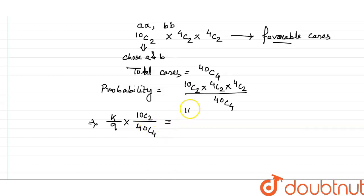You have to compare both sides. 10C2/40C4 × 4C2 × 4C2. If you compare with this, this part is the same. So what you can write down is that K/9 equals 4C2 × 4C2.